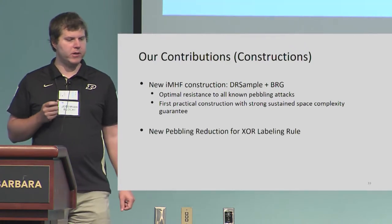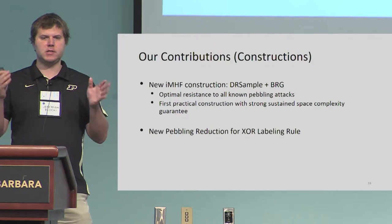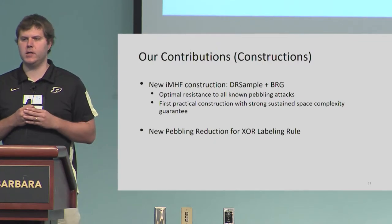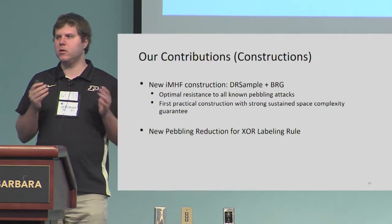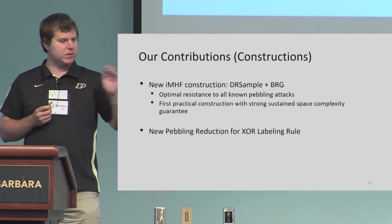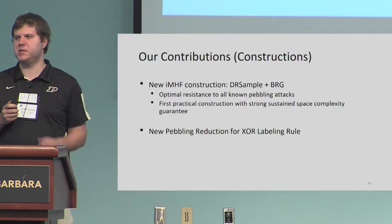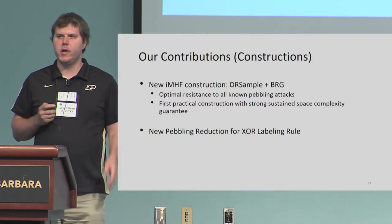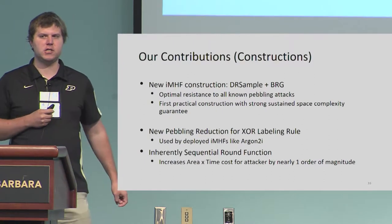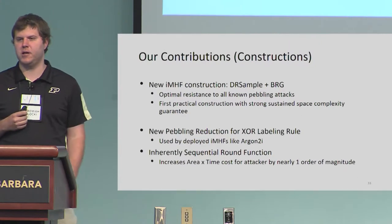We also give a new pebbling reduction for the XOR labeling rule. This is the labeling rule used in practice. Contrasting with Alwyn and Stefano's reduction, which assumed the random oracle was used with concatenation of labels, the XOR labeling rule takes all the parent labels, XORs them together, and then hashes. We give a new pebbling reduction covering this practical case. We also give a construction of an inherently sequential round function so we can reclaim the order-of-magnitude cost reduction.